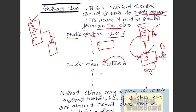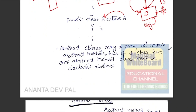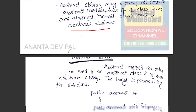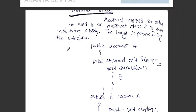For example, we have directly accessed the abstract class. The abstract class may or may not contain abstract methods. But if a class has one abstract method, it must be declared abstract. An abstract method can only be used in an abstract class and does not have a body.